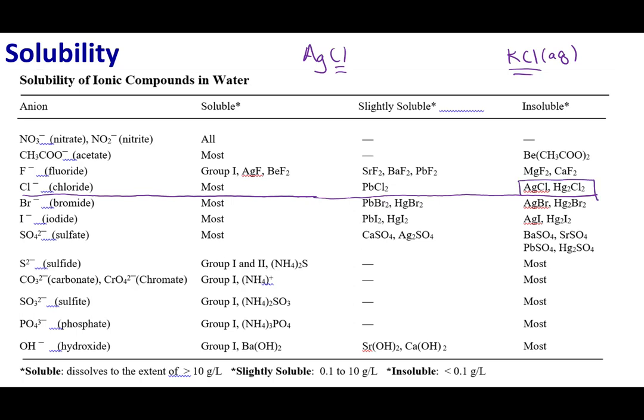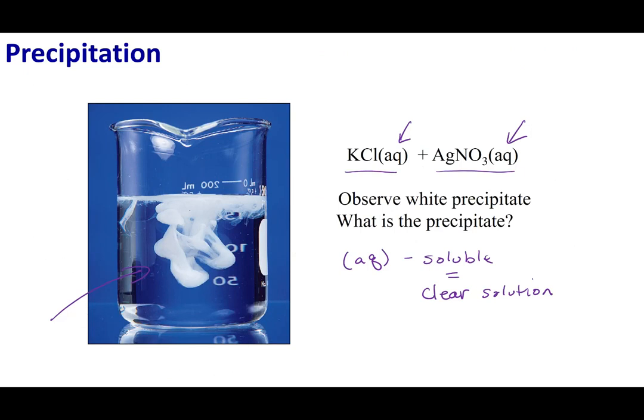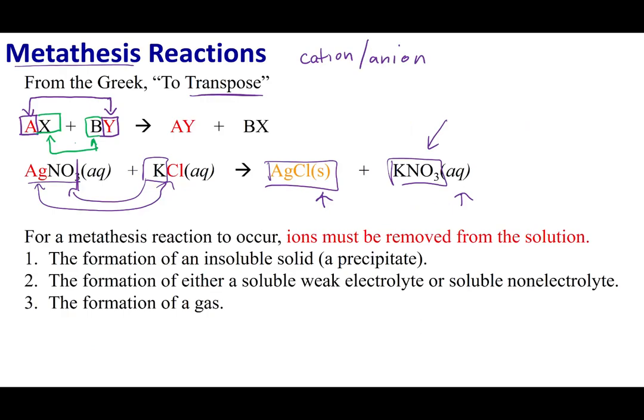For example, if I have AgCl or Hg2Cl2, these compounds are considered insoluble. I would mark S for solid if I have an insoluble compound. Going back to my picture, this precipitate is the AgCl product and not the KNO3.